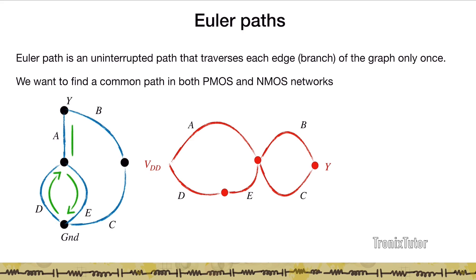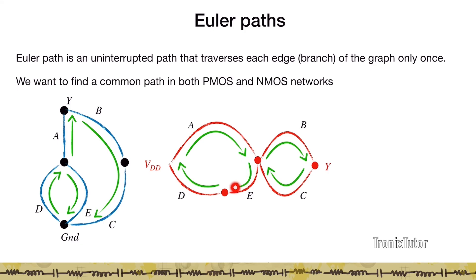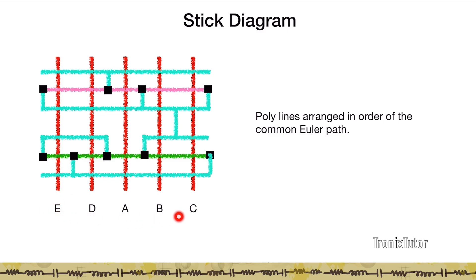Looking at the pull-down and pull-up networks, suppose we use the path E-D-A-B-C. This path traverses every edge, connects all vertices, and is the common Euler path between both networks. If we now arrange the poly lines in the order E-D-A-B-C instead of A-B-C-D-E, we maximize shared diffusions and shared contacts — achieving a stick diagram with no breaks in diffusion and no need for higher metal layers.